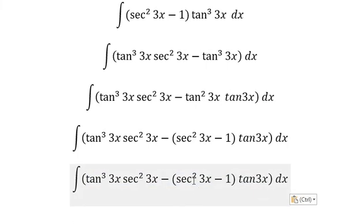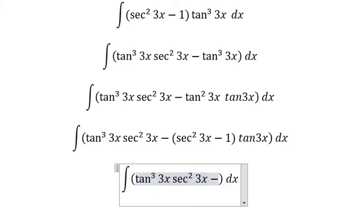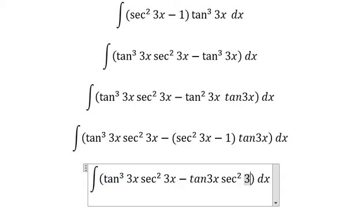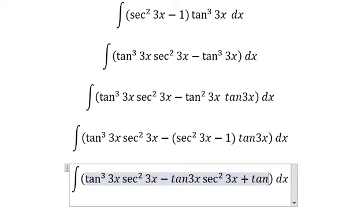And tan(3x) multiply this one and negative number one, so we got tan(3x)sec²(3x) plus tan(3x).